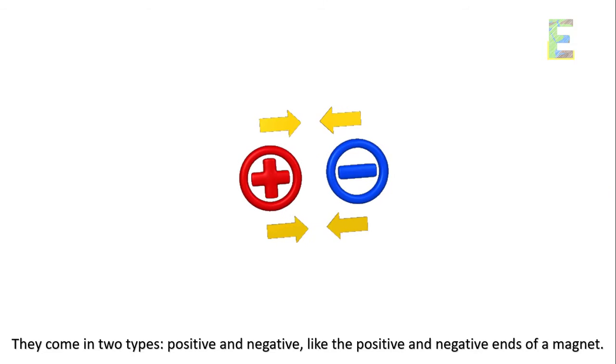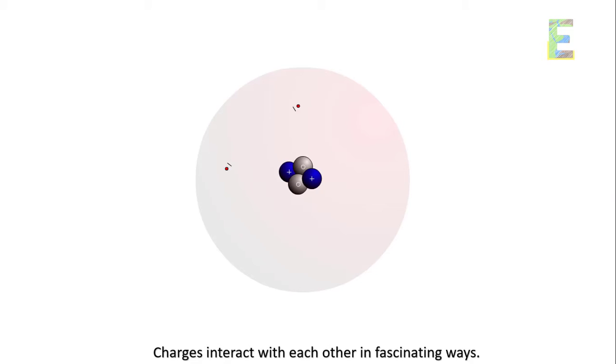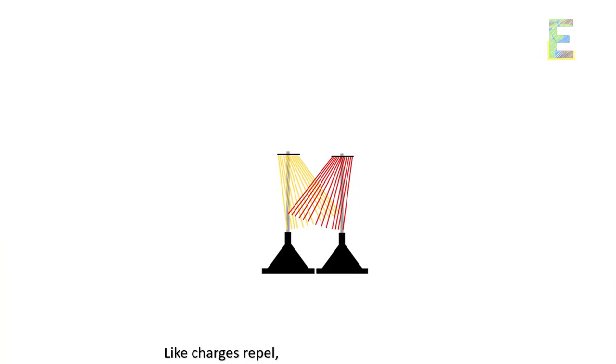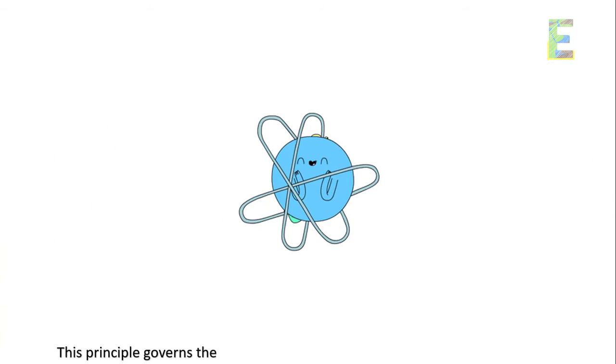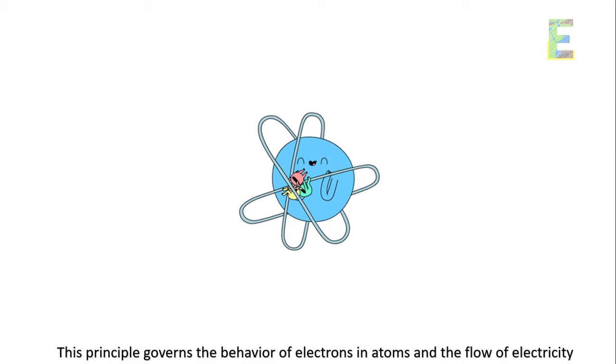Charge interaction. Charges interact with each other in fascinating ways. Like charges repel, while opposite charges attract. This principle governs the behavior of electrons in atoms and the flow of electricity.